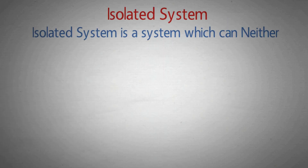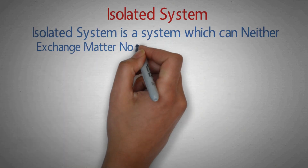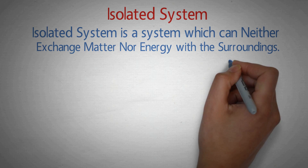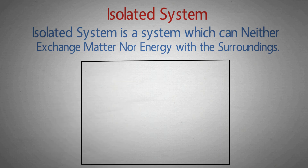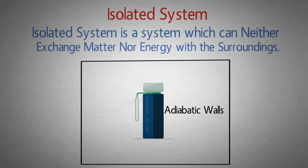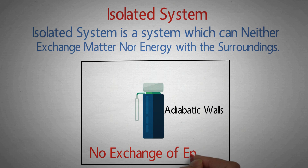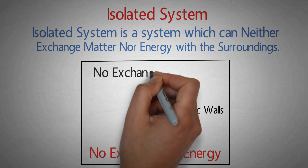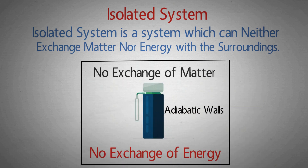Now isolated system. Isolated system can neither exchange matter nor energy with the surrounding. Example: coffee in thermos. Thermos के चारों ओर adiabatic walls होती हैं, जिसके कारण system और surroundings के बीच energy का कोई भी exchange नहीं होगा। So coffee in thermos is an isolated system.